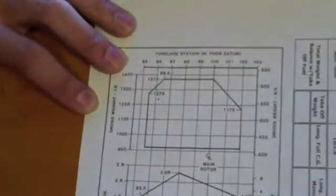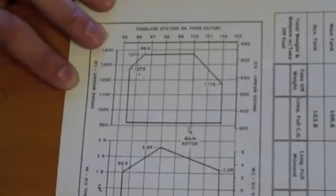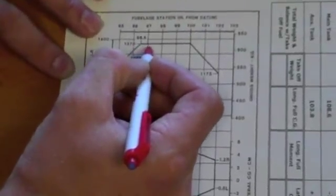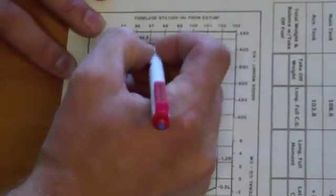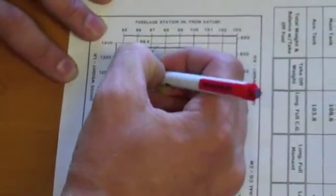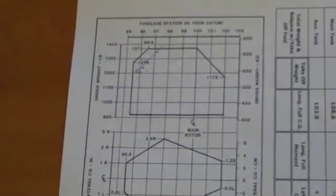Then we add fuel, which brings the weight up to 1,323 pounds and 97.1. Where the two points intersect I make another dot. At this point I can draw a line connecting them showing which way my center of gravity is going to move as we burn fuel in flight.